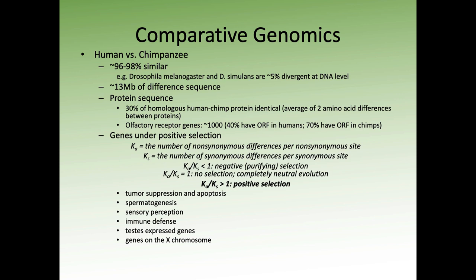The chimp genome is actually a little larger than ours. Those differences account for about 13 million bases of our 3.2 billion. At the protein level, 30% of homologous human-chimp proteins are identical, with an average difference of only about two amino acids. But that doesn't mean everything matches. For olfactory receptor genes, for instance, there's a big difference: while there are about 1,000 olfactory receptor genes in humans and chimps, about 70% in chimps have open reading frames compared to about 40% in humans, indicating chimps have much more diversity in their olfactory receptor genes.